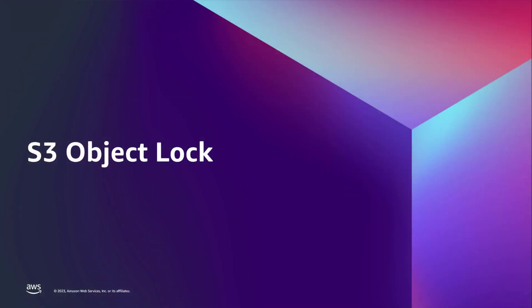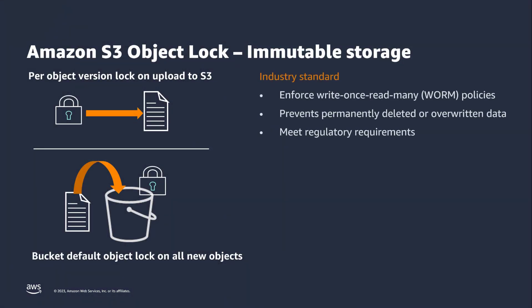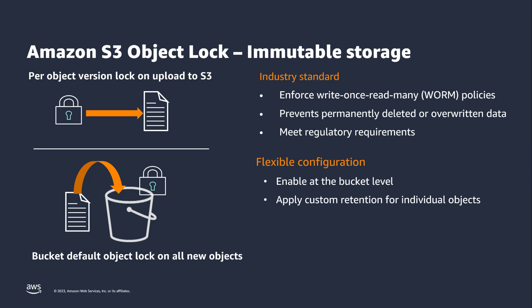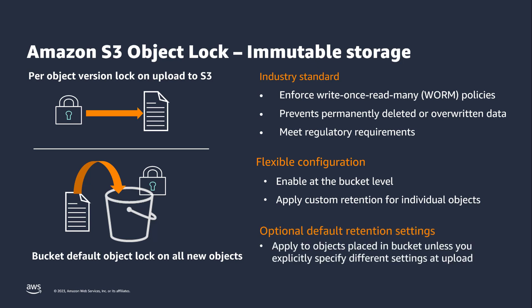Next, let's talk about how to protect your data from malicious activity using S3 Object Lock. S3 Object Lock has become the industry standard for immutable storage. It allows you to enforce a write-once, read-many, or WORM policy. You can use it to add a layer of protection against object overwrites and deletions, particularly against ransomware threats or other malicious activity, and it can also help you meet regulatory requirements. S3 Object Lock is enabled at the bucket level. Once enabled, you can specify retention settings on individual objects upon upload. You also have the option of setting a default Object Lock policy on the bucket, which will apply to all new objects unless you explicitly specify different retention settings during upload.